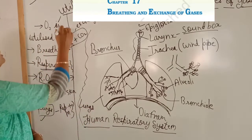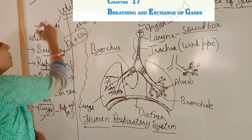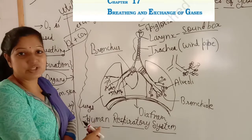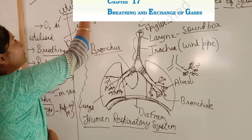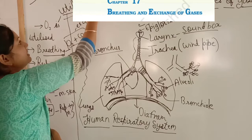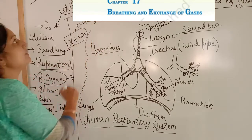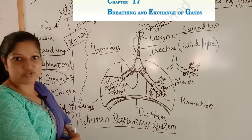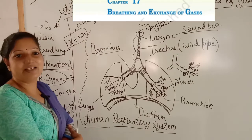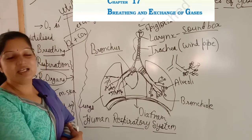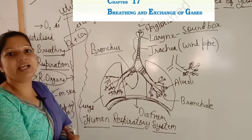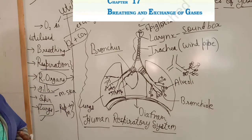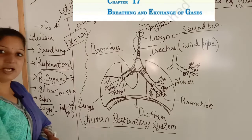Now, respiration. When oxygen is taken in through breathing organs, it is utilized in the breakdown of glucose, fatty acids, and nucleotides. These complex molecules are broken down using oxygen — this is called utilization, and it is called respiration. The energy released is stored in ATP.